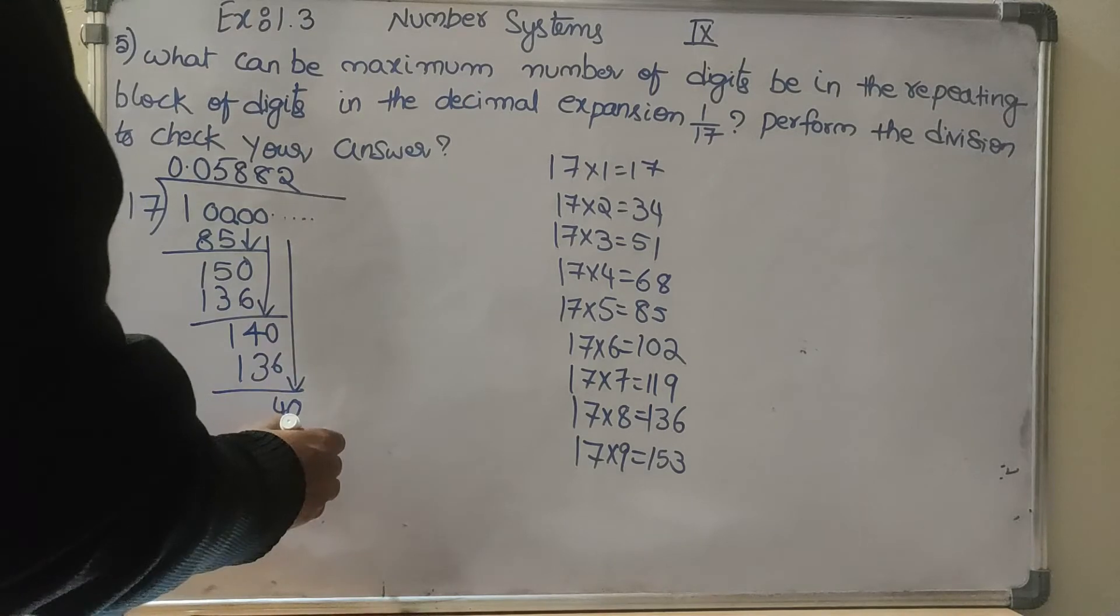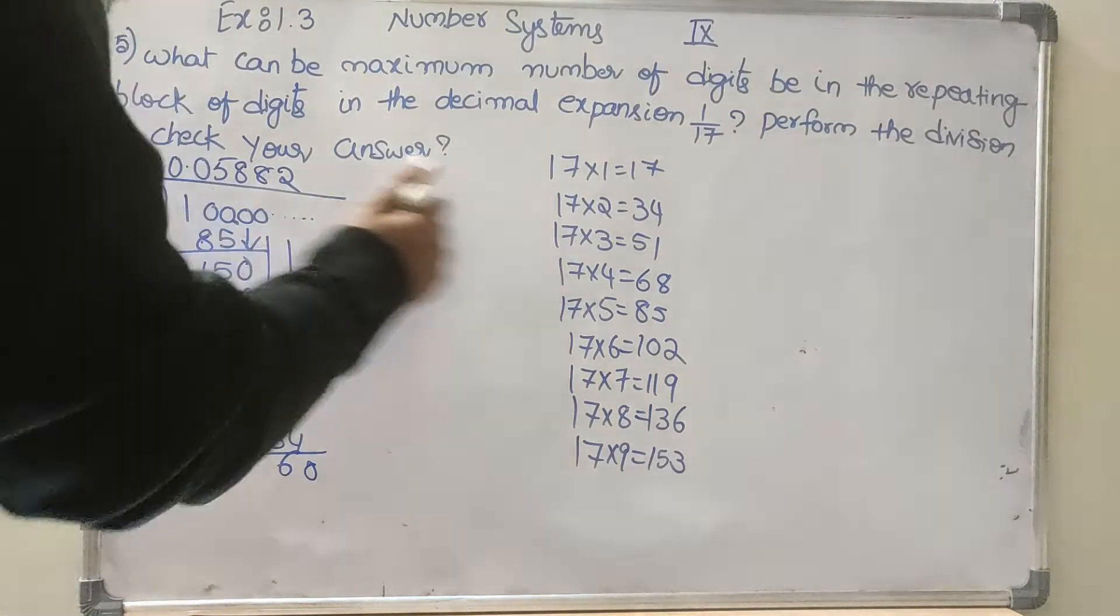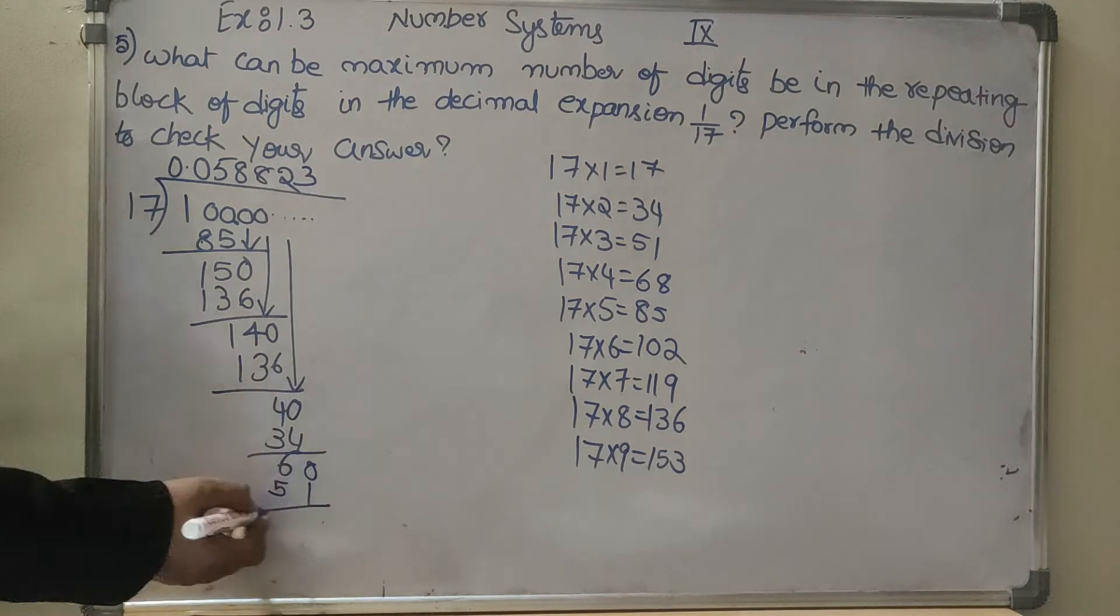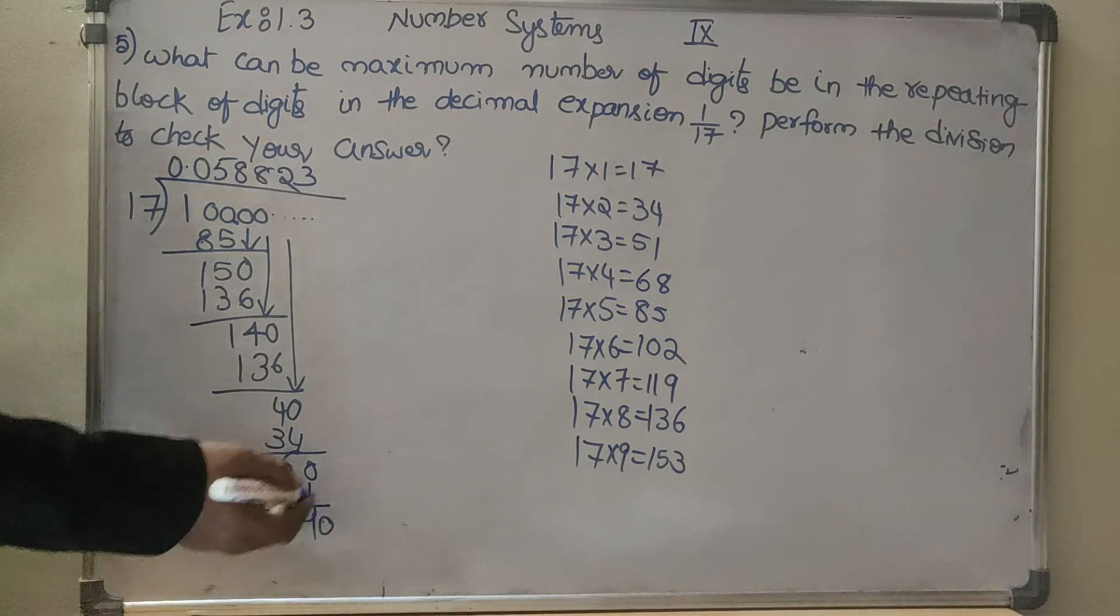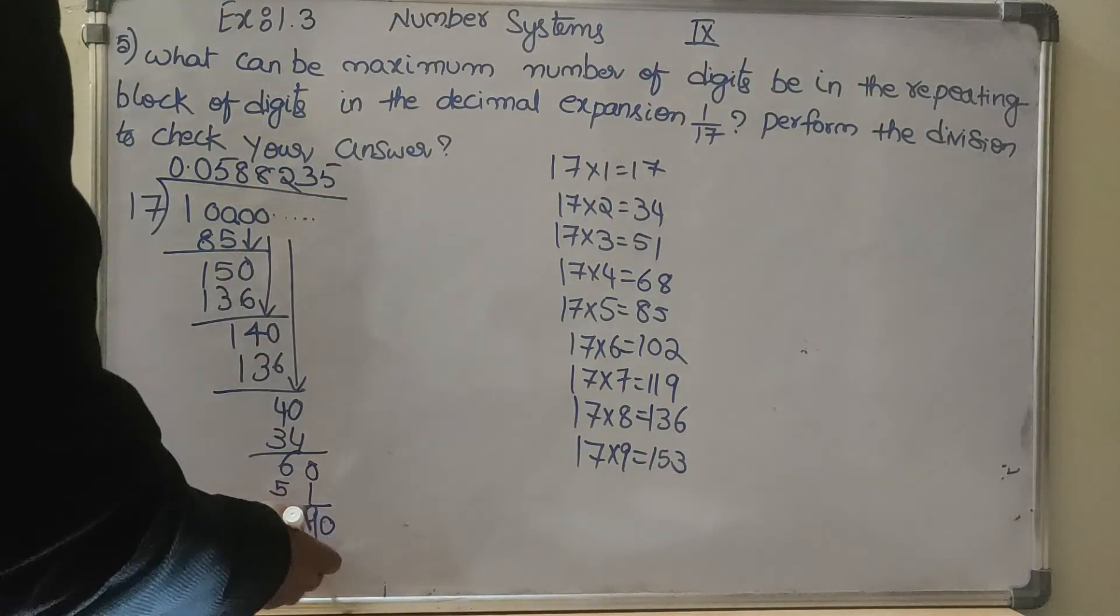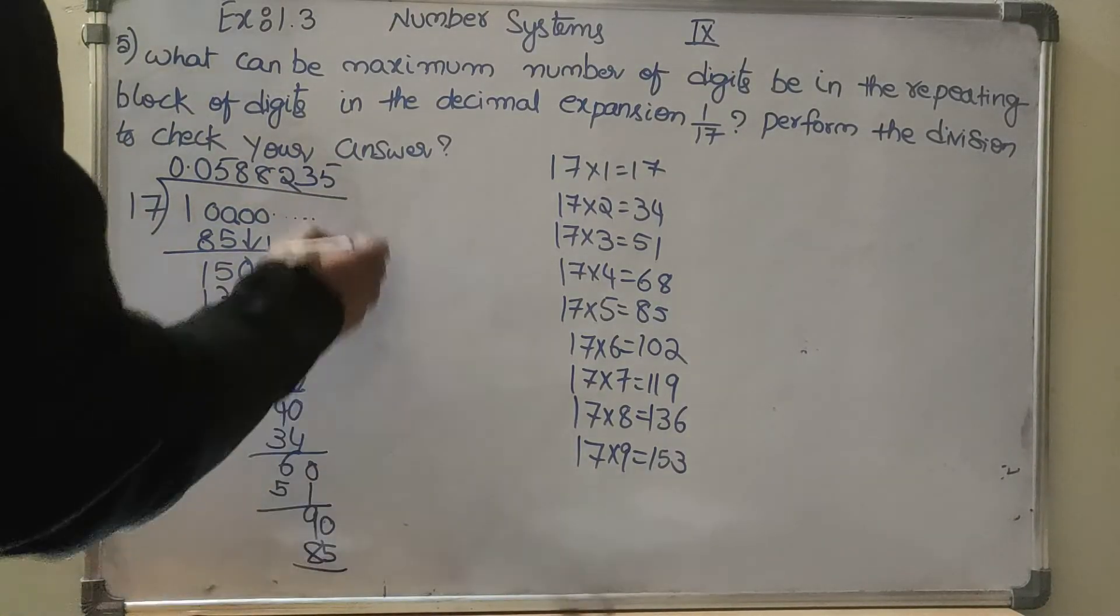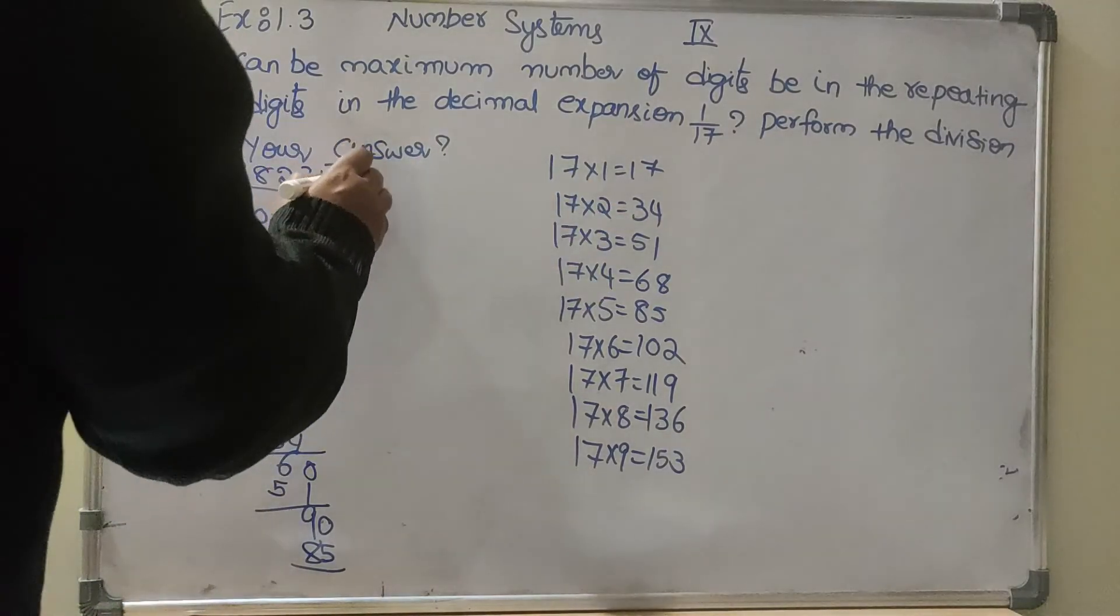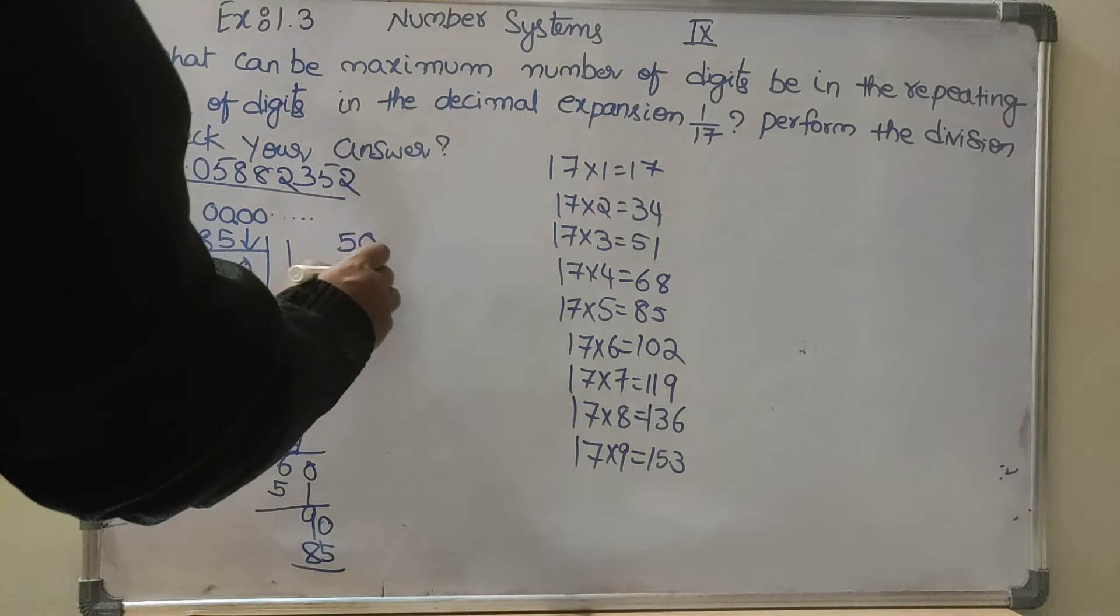So 0 comes here, 60 means 3 times which is 51, 9 is the remainder. 0 comes here, 5 times which is 85, 5 is the remainder. 0 comes here, 50 means 2 times, 34.